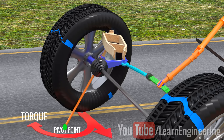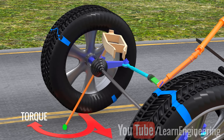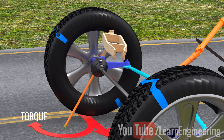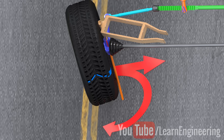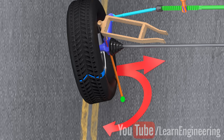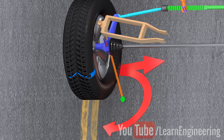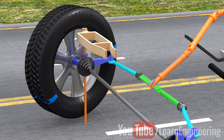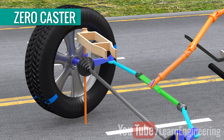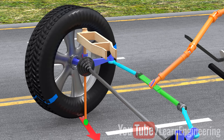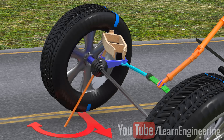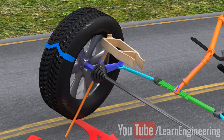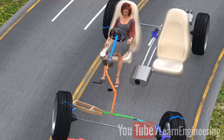If you no longer hold the steering wheel in this turned condition, the effect of the centripetal force on the wheels is obvious. It will produce a restoring torque and the wheels will automatically realign to the center. Let's watch it from the top view also to get a better idea. However, for the initial geometry with a zero caster angle, there won't be any restoring torque since the centripetal force passes through the pivot point. In short, just by giving a positive caster angle to the steering mechanism, engineers were able to attain the restoring torque.